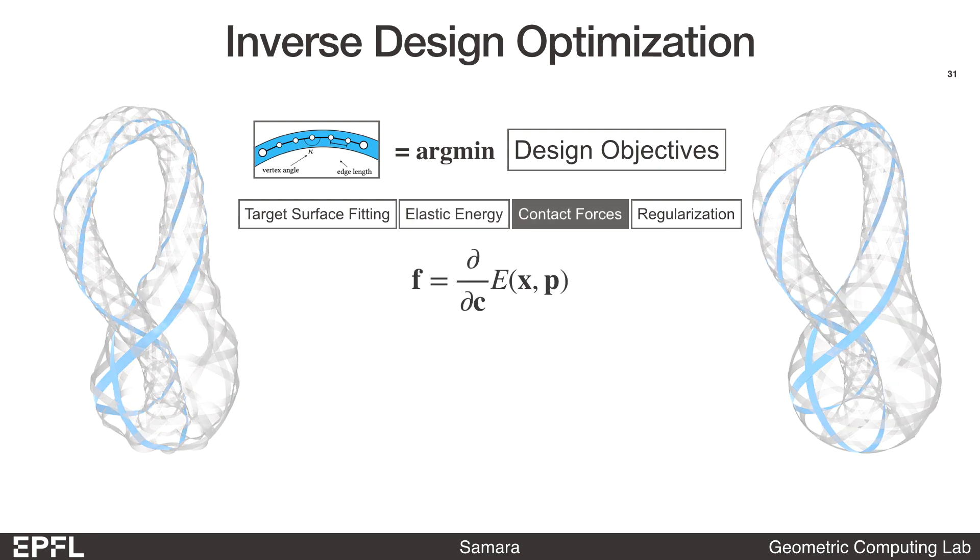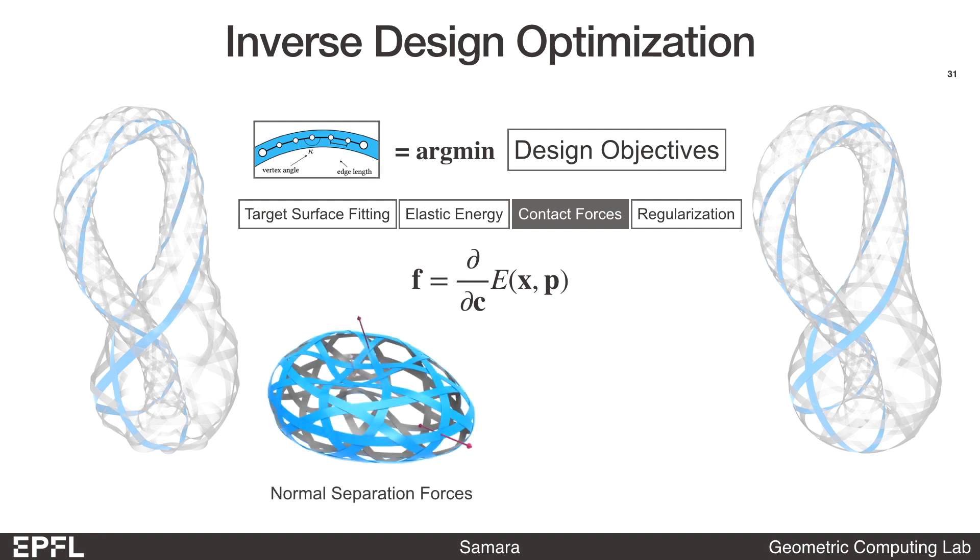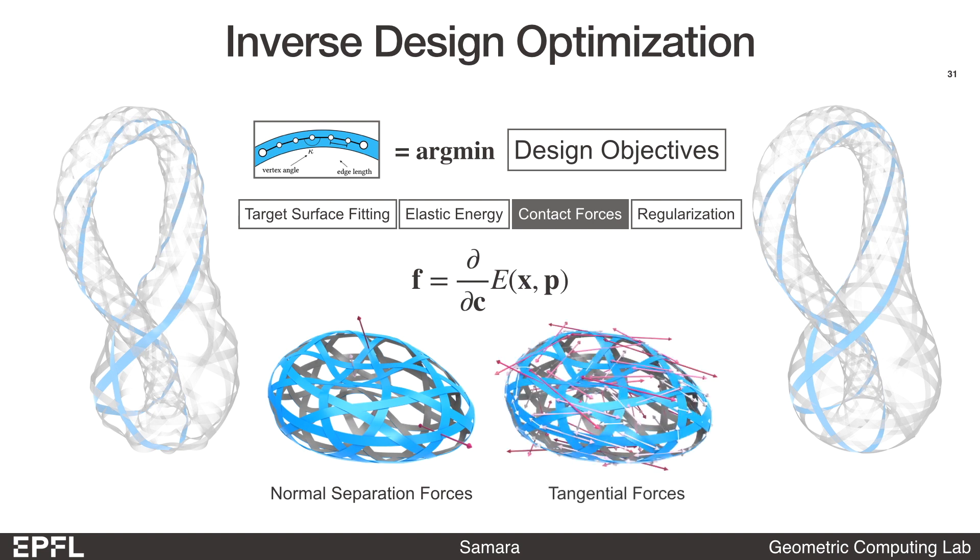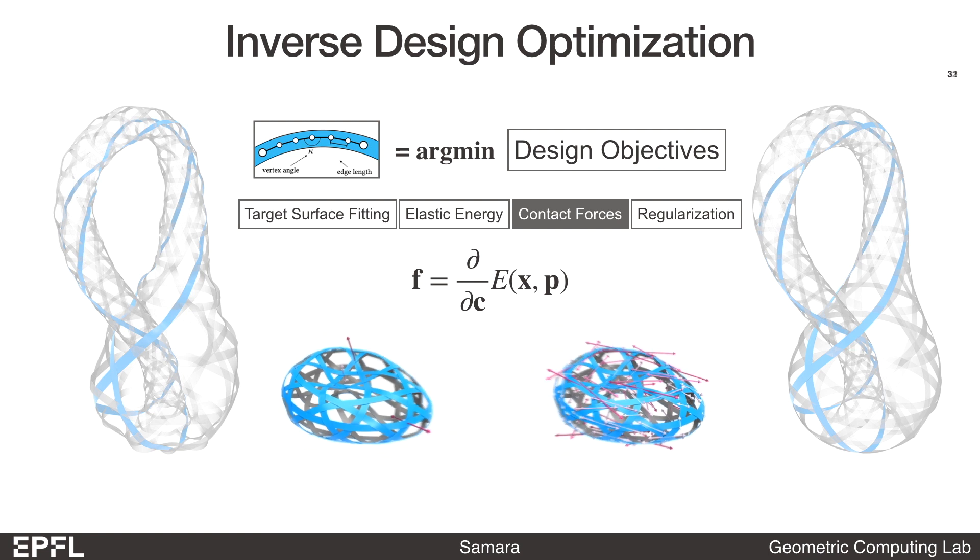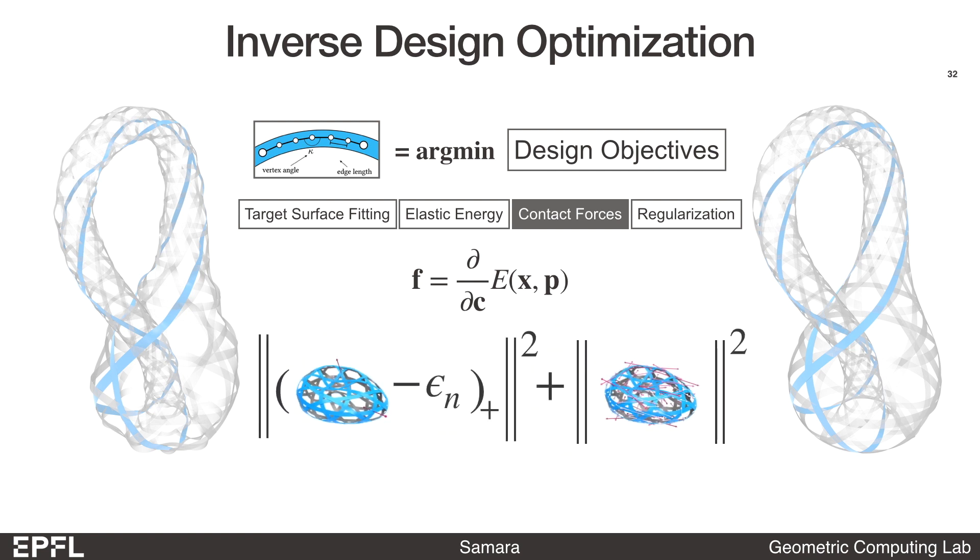Once we know the elastic energy stored in the ribbons, we can compute the contact forces at the crossing as the gradient of the elastic energy with respect to the crossing positions. These forces can be decomposed into separation or compressive forces along the normal direction, and tangential forces. In order to have a stable weave, we want to remove all separation forces and lower the tangential forces so that they can be compensated by static friction. We used an activation threshold and set it to be slightly negative to promote strictly compressive forces.